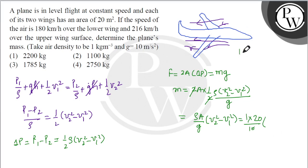Converting the speeds: 180 km/h = 180 × (5/18) = 50 m/s, and 216 km/h = 216 × (5/18) = 60 m/s.